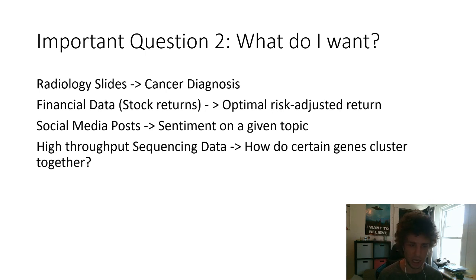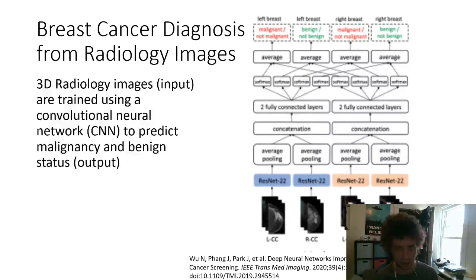Social media posts give sentiment on a given topic. High throughput sequencing is a bit different - you don't necessarily need a direct label or action. You could just ask, given the data itself, how does this data look? What's the best way to look at the data that I already have? In this case, they use the data itself as an output.